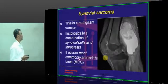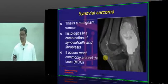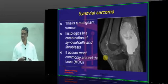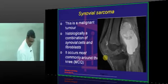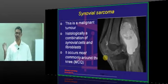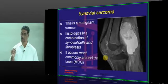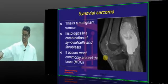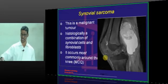Synovial sarcoma — the word synovial sarcoma indicates that it arises from synovium, but it need not always be so. In fact, synovial tissue is not only present in the synovium. Take for example rheumatoid arthritis: it affects the synovium, but it also affects the tendons — tenosynovitis.